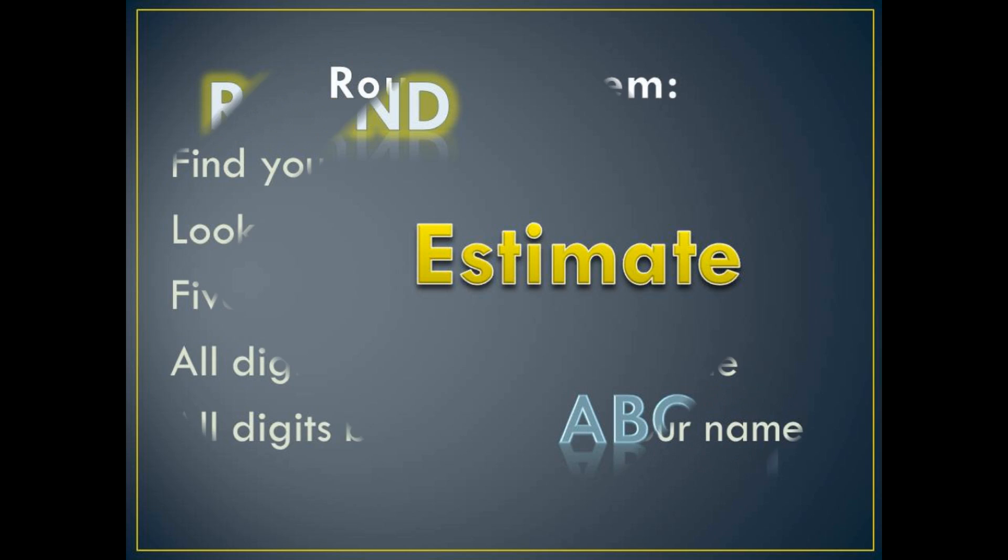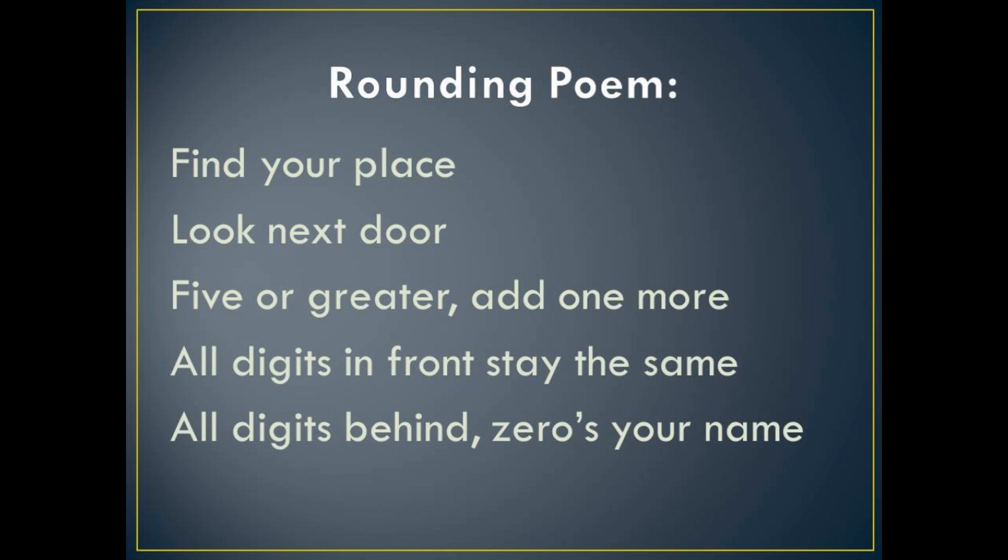Today, I'm going to show you a very simple way to round using a poem. First, let's learn the poem. Here it is: Find your place. Look next door. Five or greater, add one more. All digits in front stay the same. All digits behind, zeros your name.